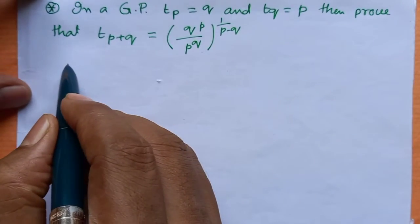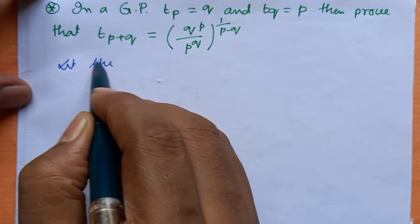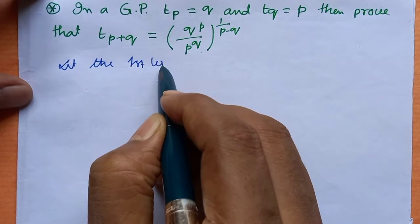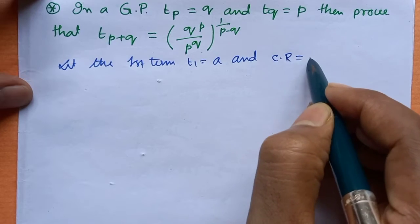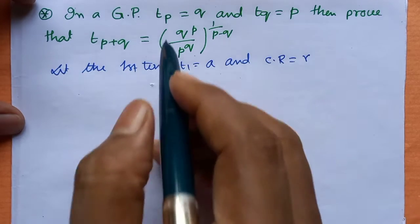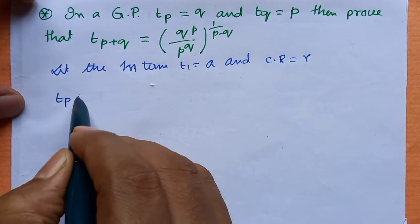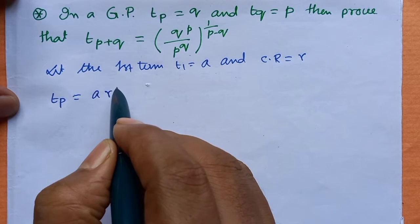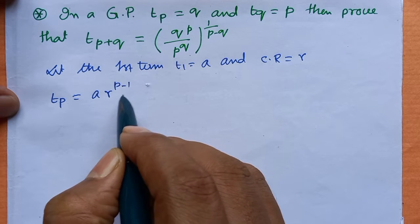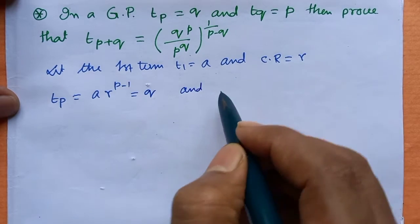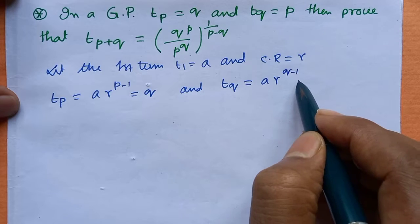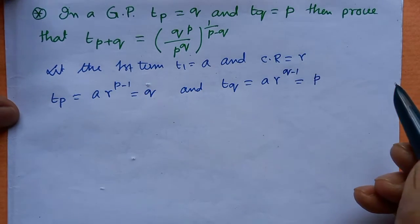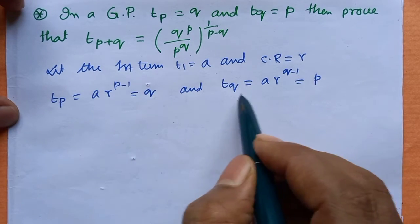Let the first term t1 equal a and the common ratio equal r. So the pth term tp equals a into r to the power (p minus 1), and it is given that this equals q. Similarly, tq equals a times r to the power (q minus 1), and this equals p.